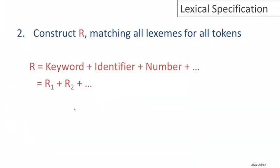Now, as the second step, what we're going to do is we're going to construct a gigantic regular expression, which just matches all the lexemes for all the tokens. And this is just the union of all the regular expressions that we wrote down on the previous slide. So we just take the union of all those regular expressions and that forms the lexical specification of the language. And we'll just write this out. We don't really care what these regular expressions are, but they're just some set R1, R2, and so on. And the whole thing we're going to call R.